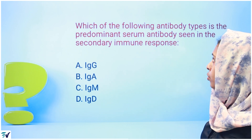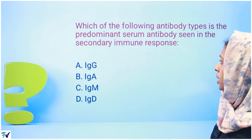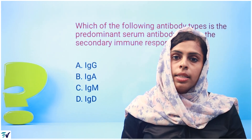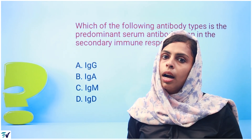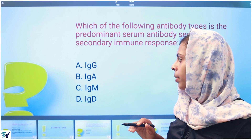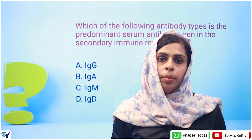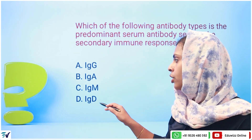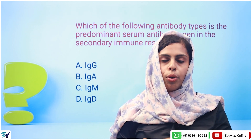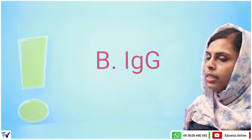Next question: which antibody type is the predominant serum antibody seen in secondary immune response? In secondary immune response, IgG is the highest type of immunoglobulin. Primarily IgM is in the first response, IgA is mostly in secretions, and IgD is at a low level. So the answer is IgG.